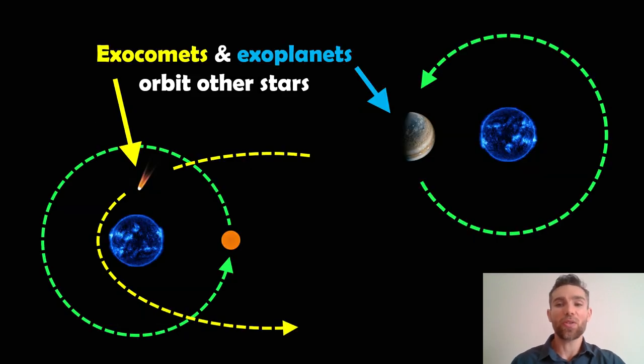So going forward on to this video, exocomets and exoplanets are basically comets and planets that orbit other stars. We use the exo part to say that it's extra solar, which means it's not orbiting our Sun, it's outside of the solar system. So exocomets in this context are just comets around other stars.